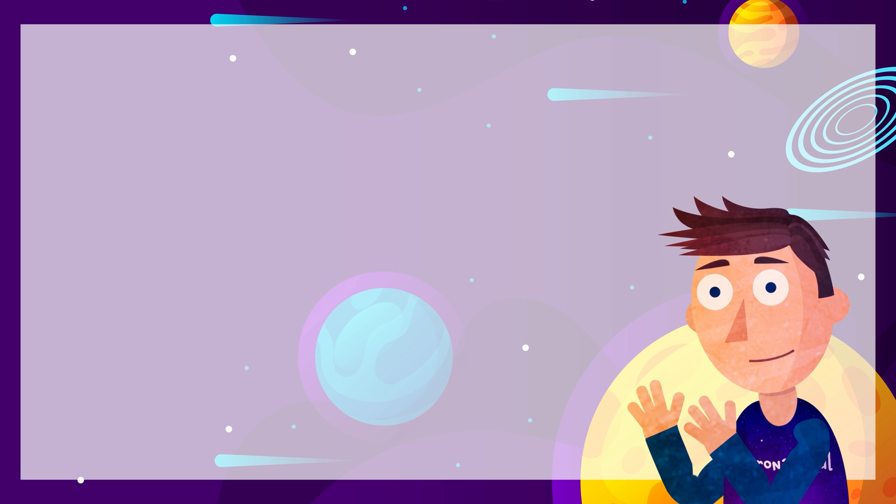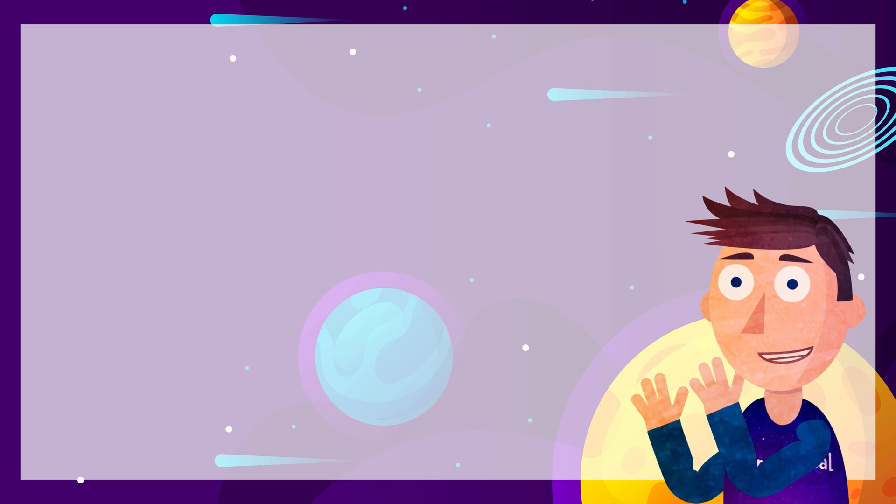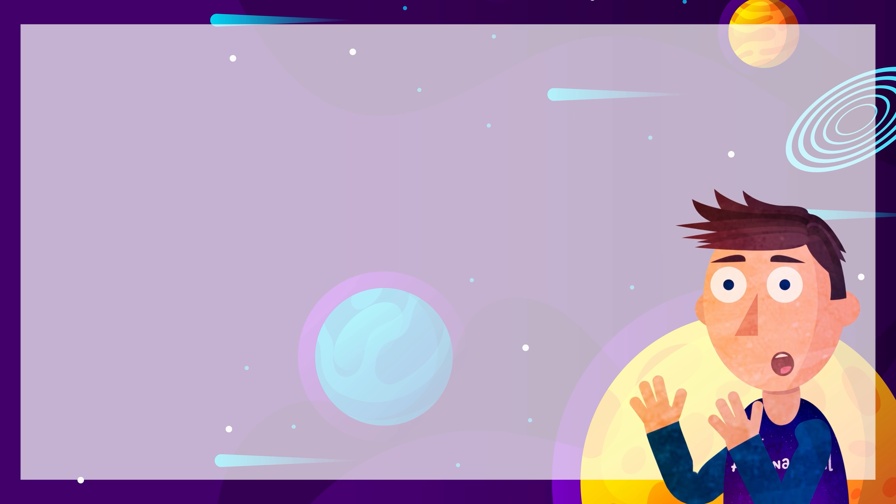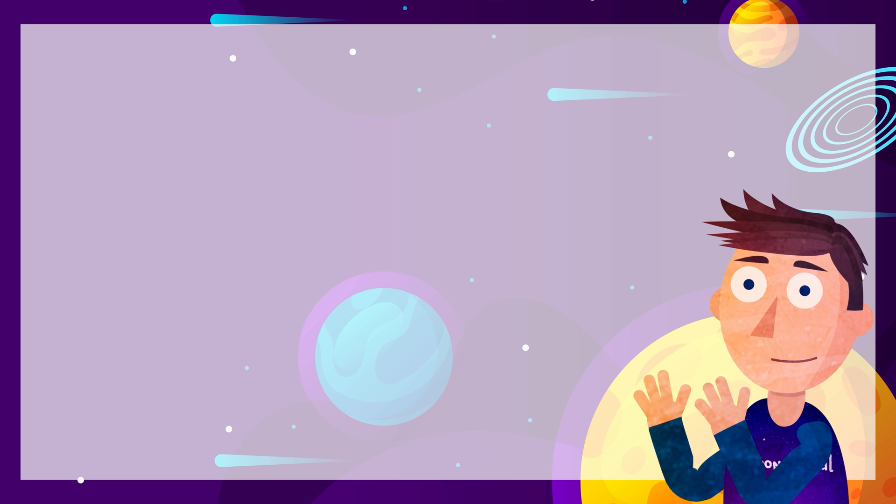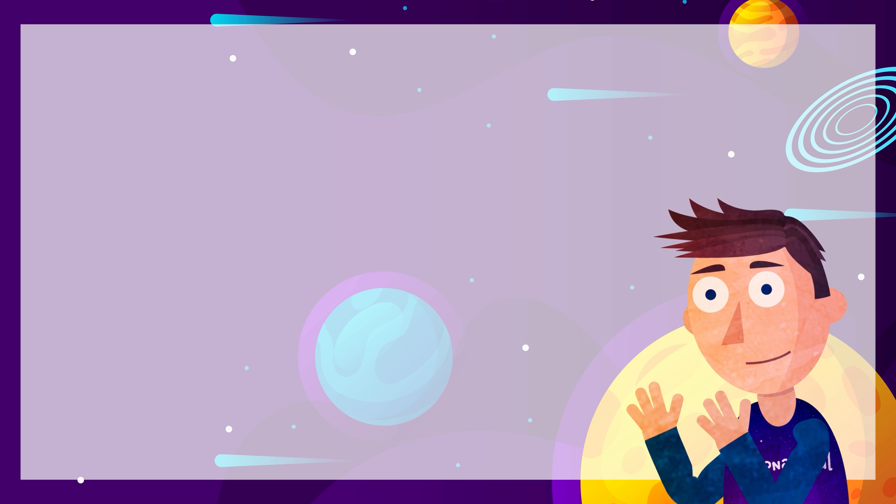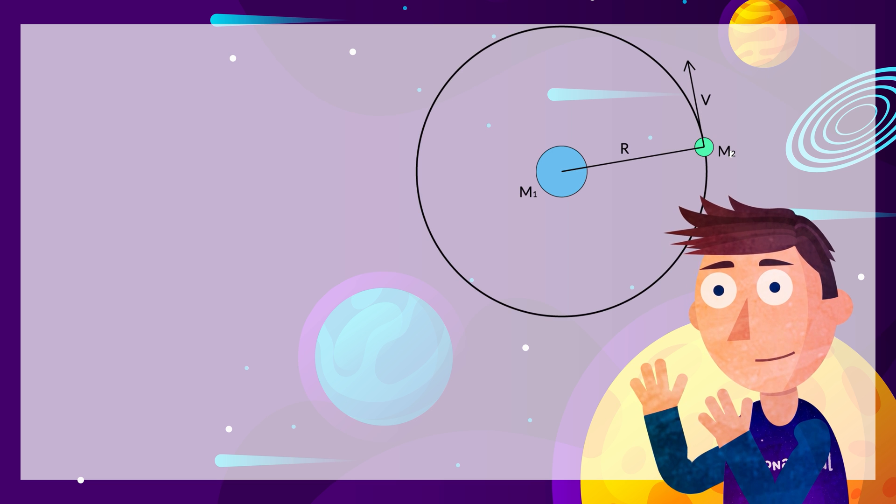While orbits in nature are ellipses, these shapes have complex mathematics around them, and so for our conceptual understanding of basic orbital mechanics, a theoretical circular orbit will suffice.